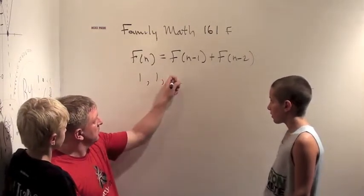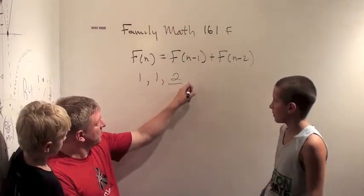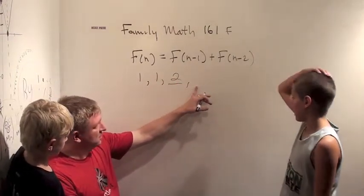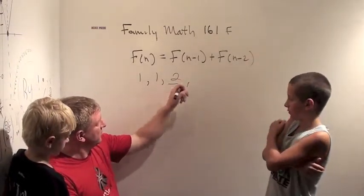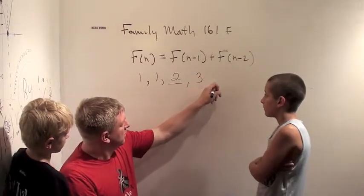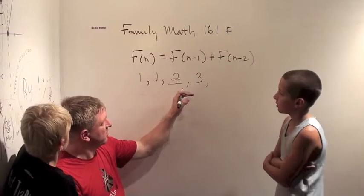Two. Okay, why? Because one plus one is two. Okay, what's the next number? Three. How do you get that? Because one plus two is three. I'm adding the one behind it plus the one two behind it. What's the next number? Five. Two plus three. One behind it plus the one.